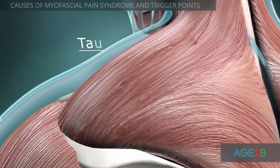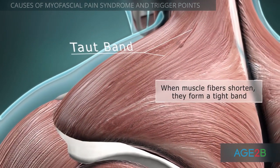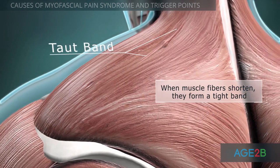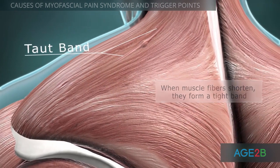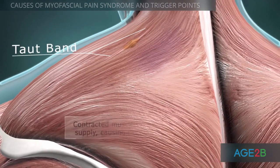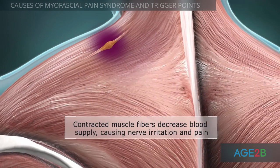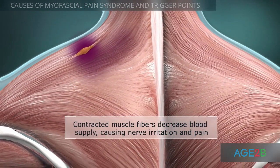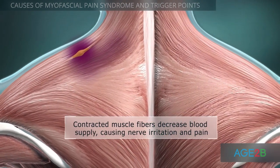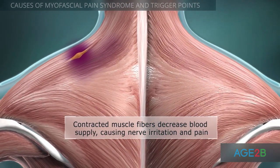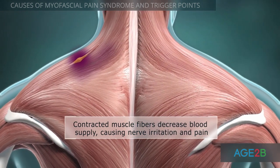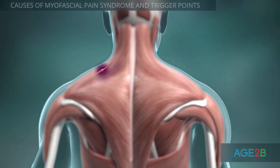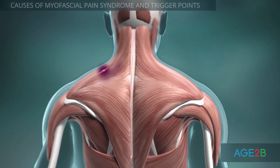Fibers extending from the trigger point to the muscle attachments shorten and form a tight band. The persistent contraction of muscle fibers compresses blood vessels and decreases their blood supply, leading to oxygen starvation and the accumulation of waste products. This irritates nerves and causes pain.